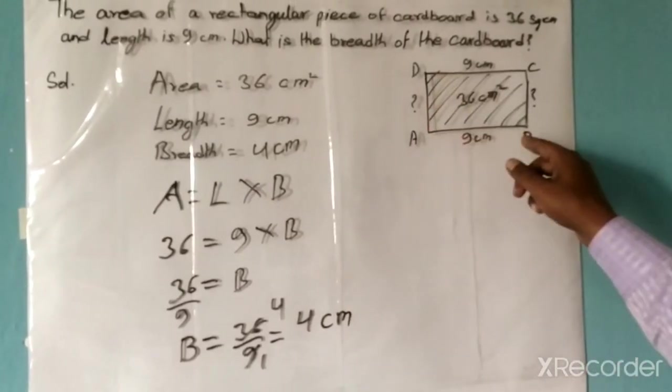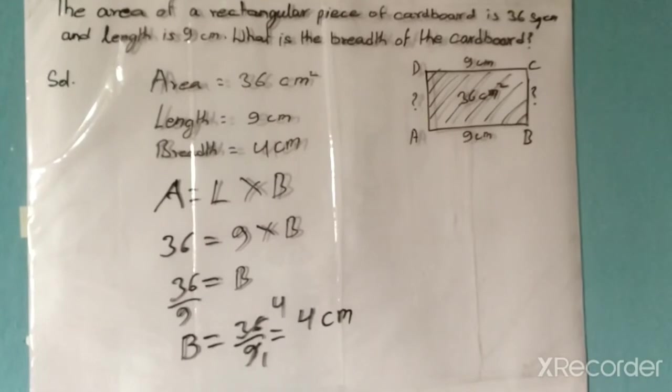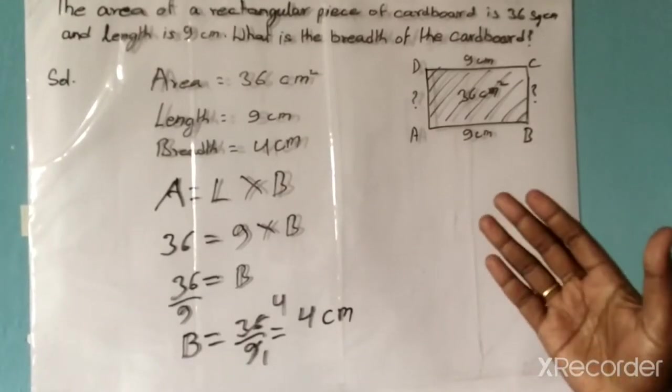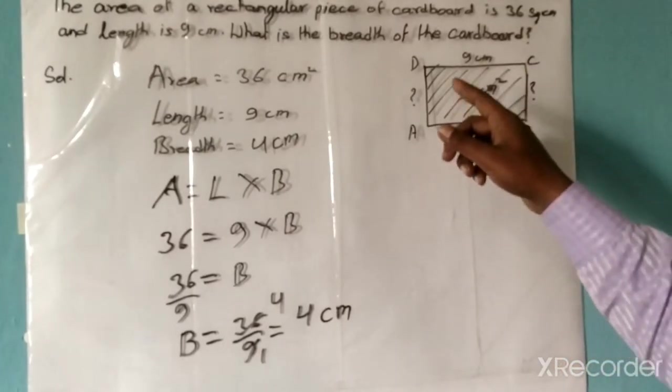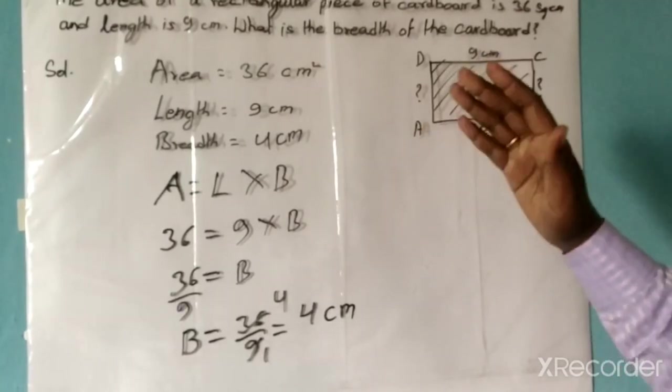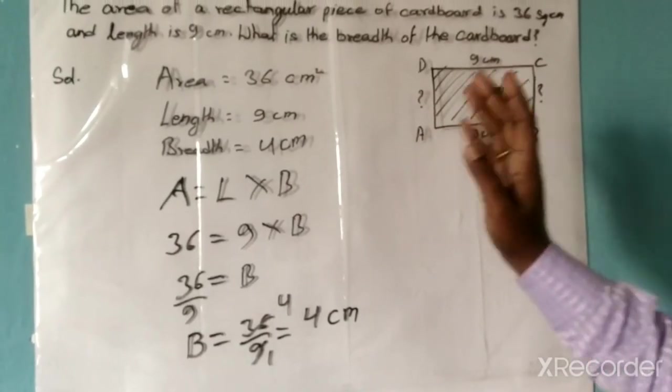So B equals 36 divided by 9 equals 4, which is the breadth of the rectangular cardboard. Friends, I think the concept is clear how to apply this formula to find any aspect of a rectangular shape.